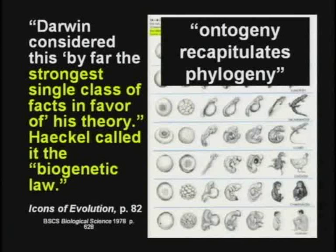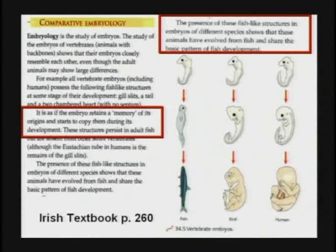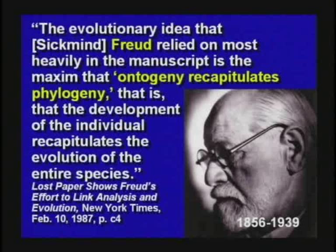The phrase they had for it back then was ontogeny recapitulates phylogeny. What does that mean? Ontogeny is the growth of the baby — it goes through stages. Recapitulates means it reenacts or does over again. Phylogeny is the evolutionary sequence. This Irish textbook says the presence of fish-like structures in embryos shows these animals evolved from fish. It's as if the embryo retains a memory of its origins. That's ontogeny recapitulates phylogeny — the idea that the development of the individual recapitulates the evolution of the entire species. This is stupid and dangerous.